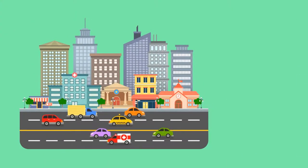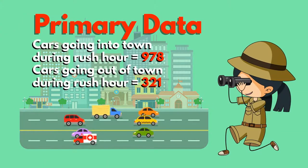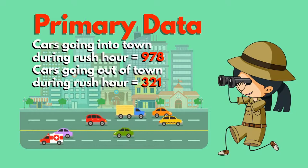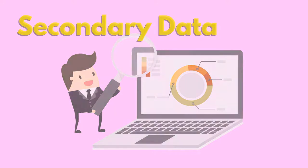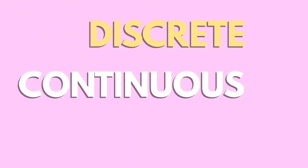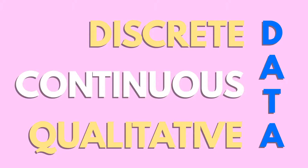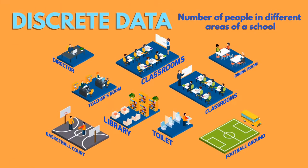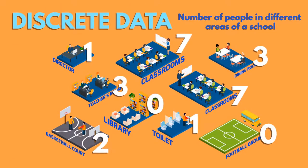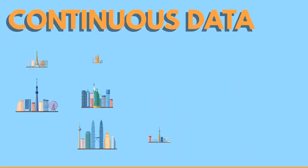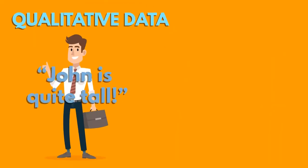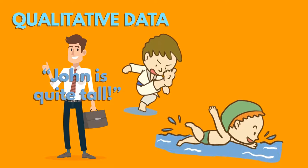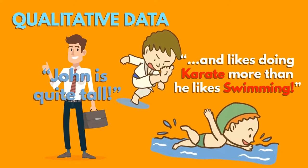Types of data can be categorised. Primary data is that which you collect yourself. Secondary data is that which someone else has collected. You must also be aware of discrete, continuous and qualitative data. Discrete data can only be of particular values, each of which can be counted up. Continuous data can take any value within a range and can be measured on a scale. Qualitative data is descriptive in nature — it tells us a lot but is not a numerical measurement of anything.